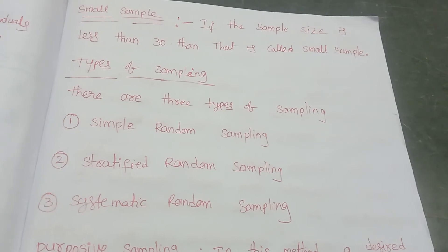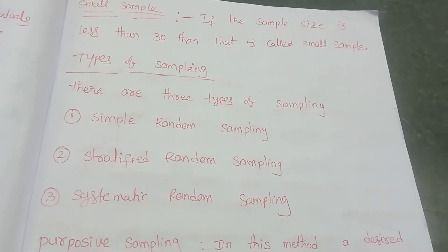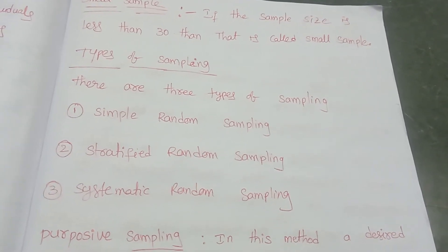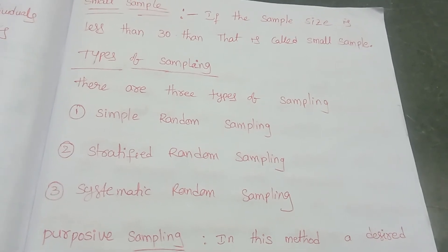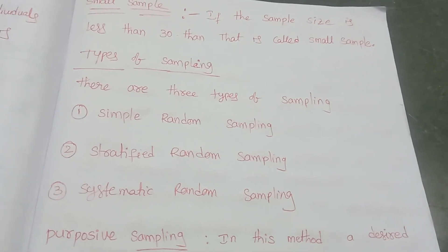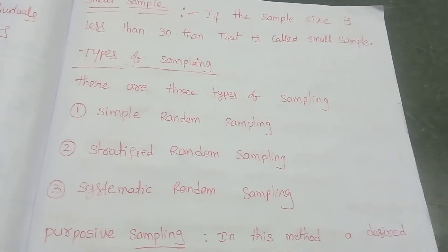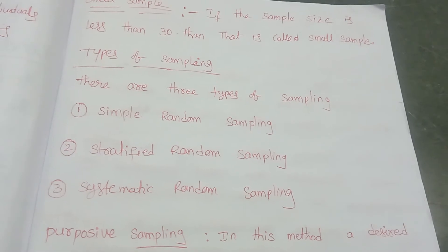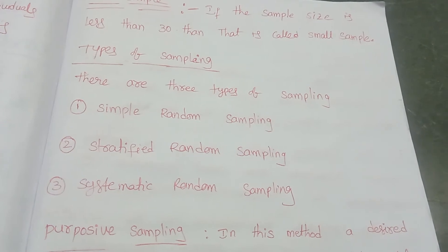The second type is stratified random sampling. Stratified random sampling means we divide the data into strata or groups. From the first group we select one member, from the second group also one member, from the third group also one member. Like that, we divide the whole data into groups and from those groups we select the sample.